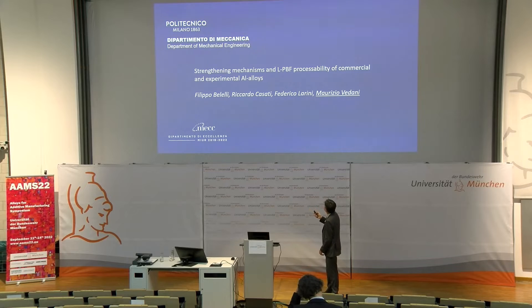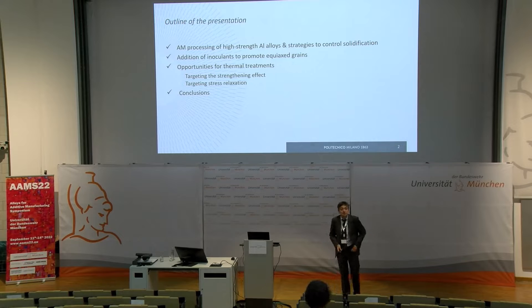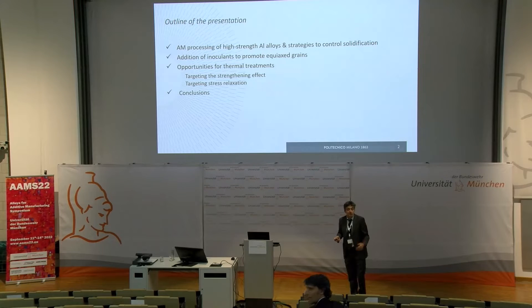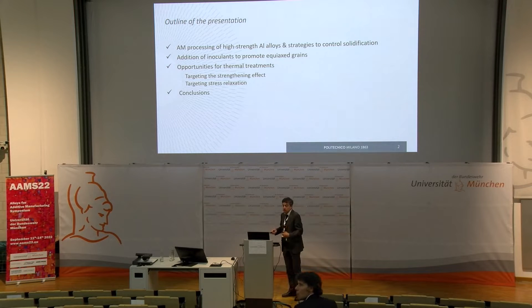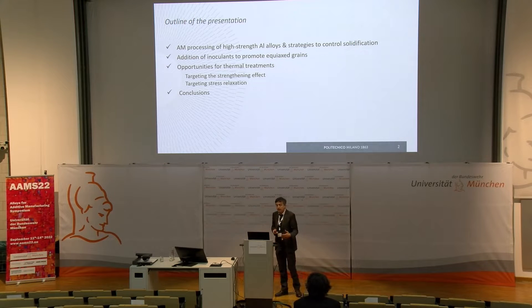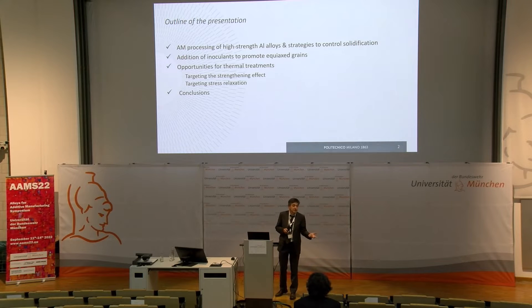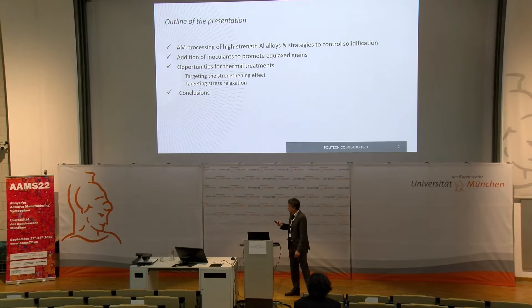We are going to talk about aluminum alloys, the strengthening mechanisms, and processability. The outline covers strategies we need to adopt for control of solidification — among them, additional inoculants will be focused on particularly. Then we will move on to opportunities for heat treatment, considering both inoculants and other precipitates that may be formed to strengthen the alloy. We are targeting the increase of strength, but also considering stress relaxation and control of residual stresses. Finally, we can draw some conclusions.